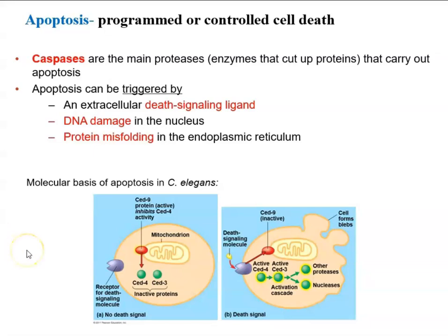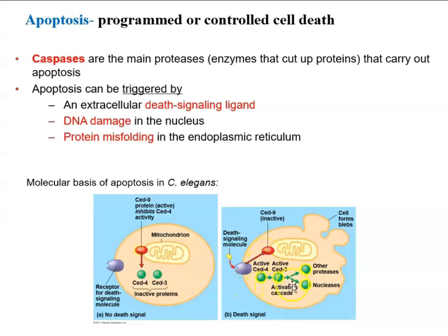This diagram shows C. elegans, a tiny worm with few cells that serves as a model organism. Its cells have a receptor for a death signaling molecule. Normally, when the signaling molecule is absent, a protein sitting within the mitochondria inactivates all caspases — so no cell death occurs. However, when a death signaling molecule binds to the receptor, that mitochondrial membrane protein is inactivated, all caspases are turned on, proteases break down proteins, and nucleases break down nucleic acids — resulting in the actual death of the cell undergoing apoptosis.